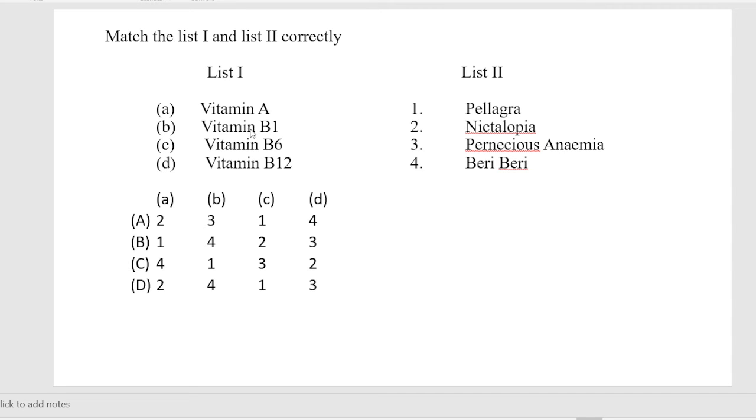Next, Vitamin A deficiency causes night blindness. Vitamin B1 causes beriberi. Vitamin B6 is pellagra. Vitamin B12 is pernicious anemia. The answer is 2, 4, 1, 3, which is D, the right answer.